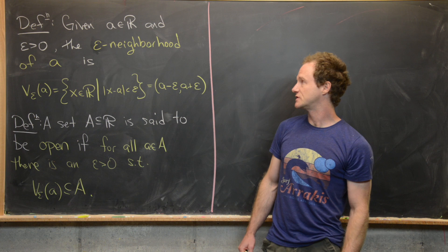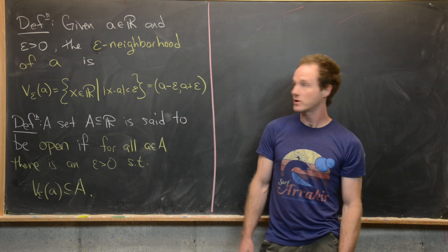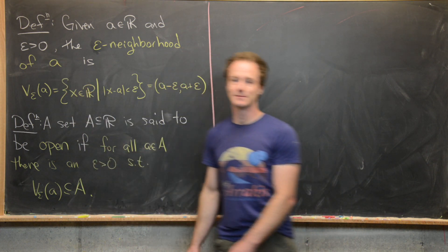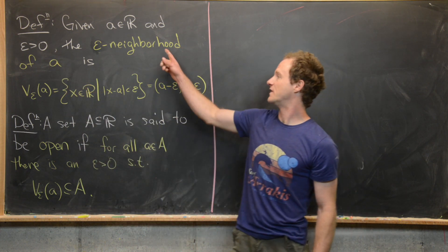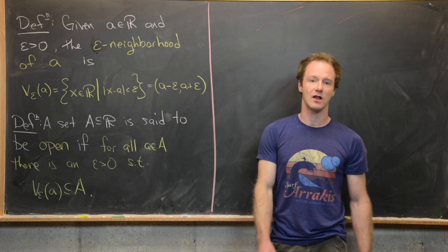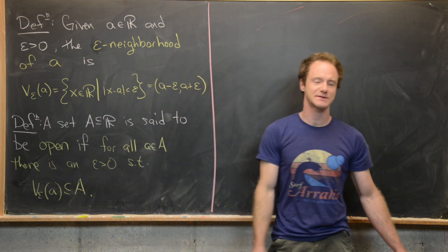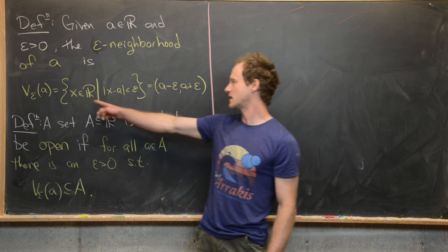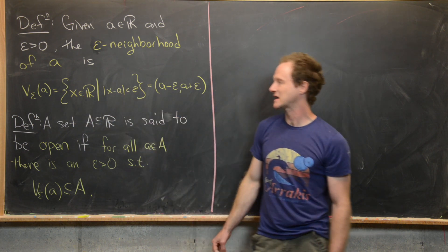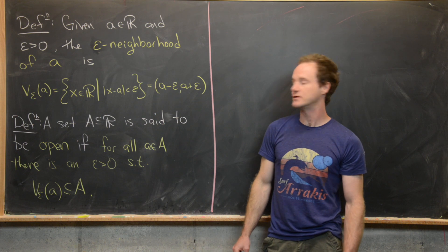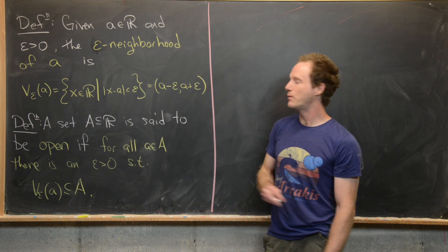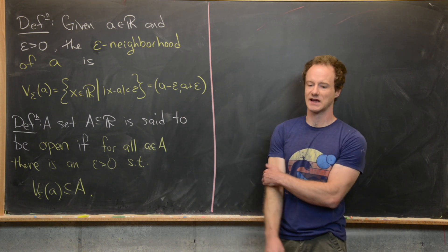Let's first introduce the notion of an epsilon neighborhood. Given any real number a and any epsilon greater than zero, the epsilon neighborhood of a is defined as the set V_epsilon(a), which is all values of x such that |x - a| < epsilon. In other words, it's the open interval from a minus epsilon to a plus epsilon.